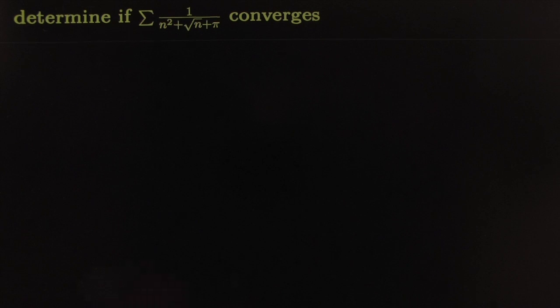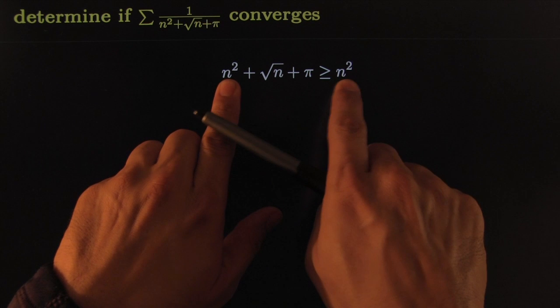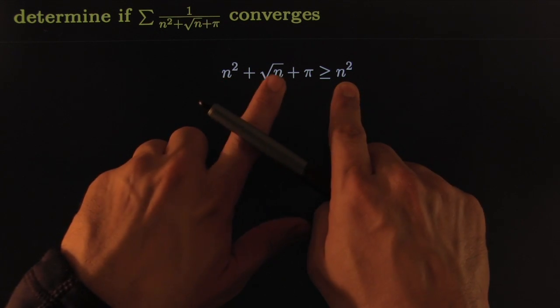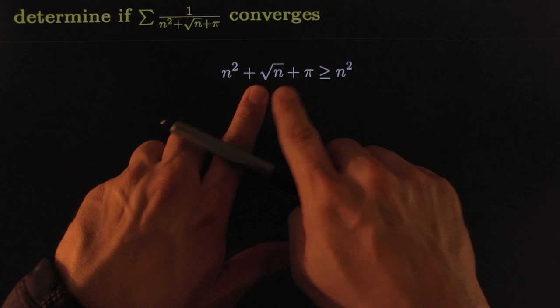What's going on here? We can say that this number has n squared. This one has n squared and then some. It has already as much as this one but then it adds more stuff. It adds pi and square root of n.